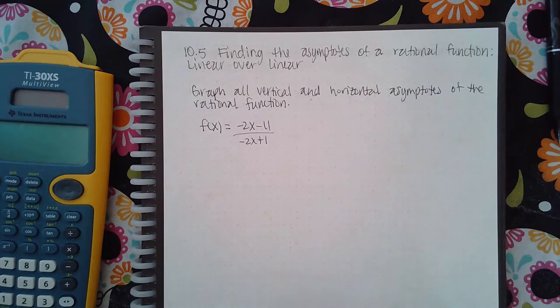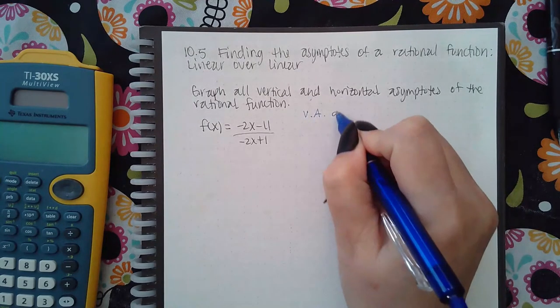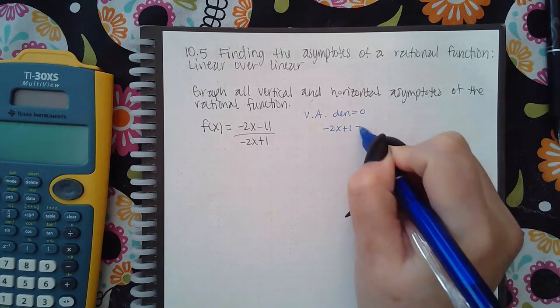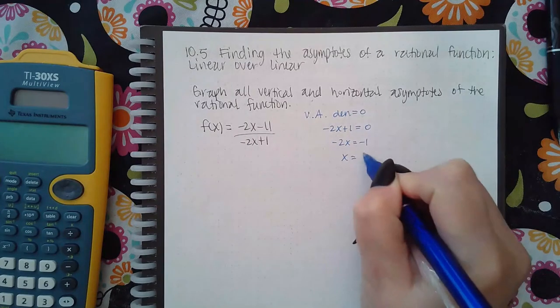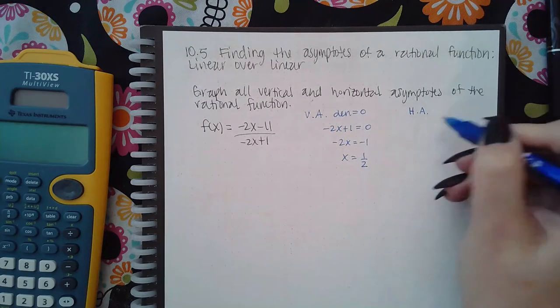Okay, so here it wants me to find the asymptotes of this rational function. For the vertical asymptotes, you set your denominator equal to zero. So I'm going to take my denominator, equal it to zero, and I'm going to solve for x. I get one half.